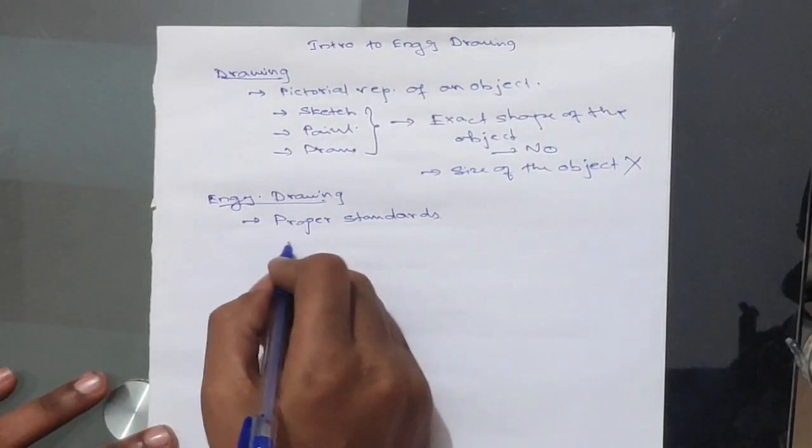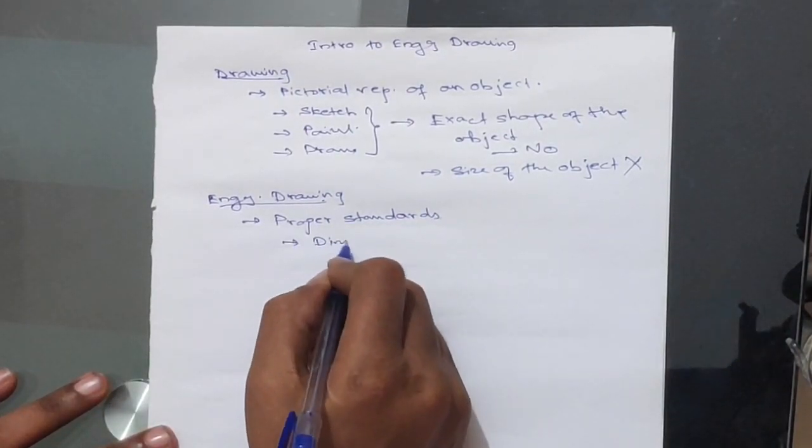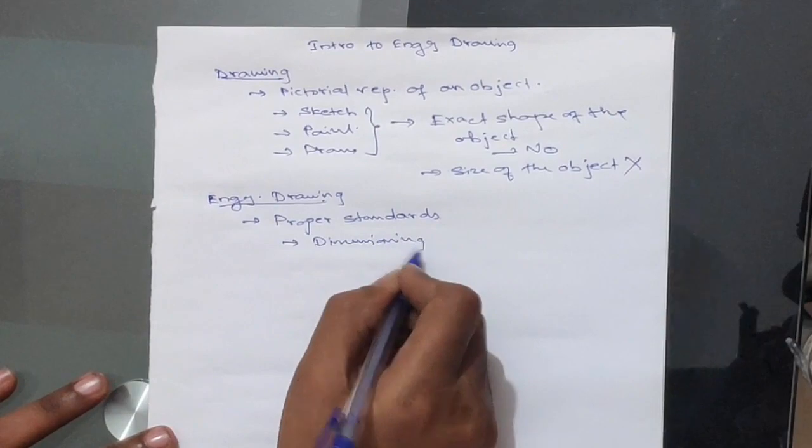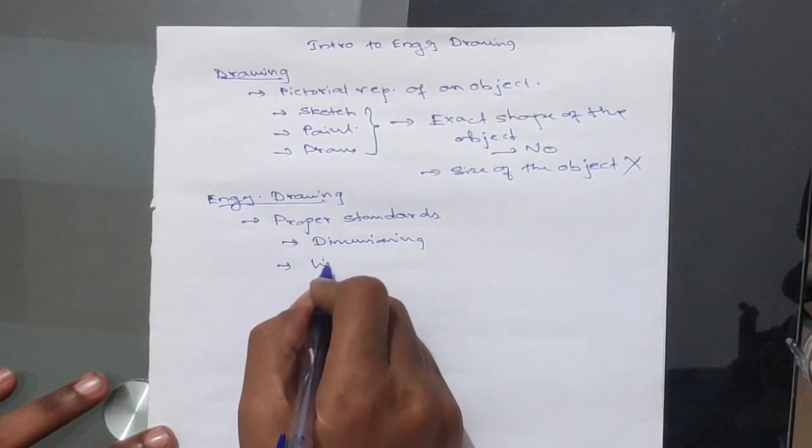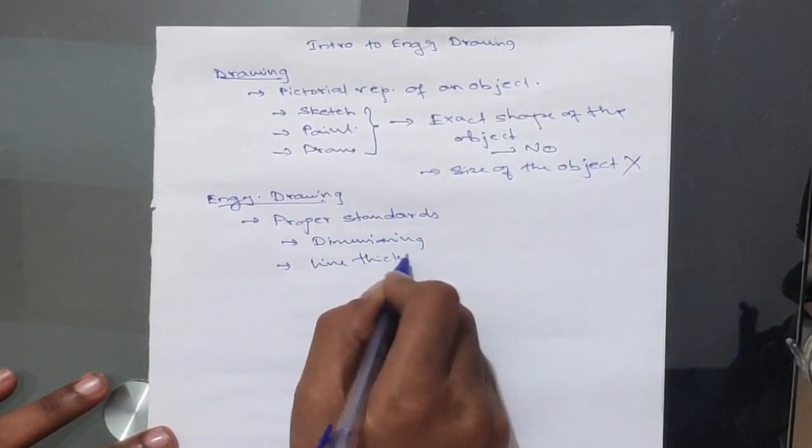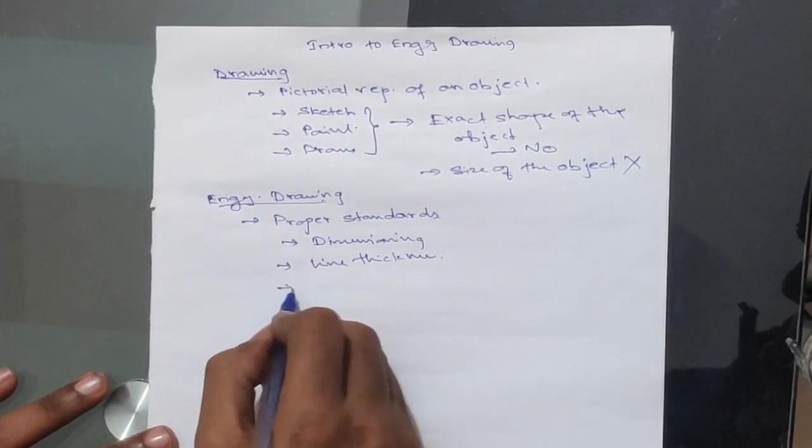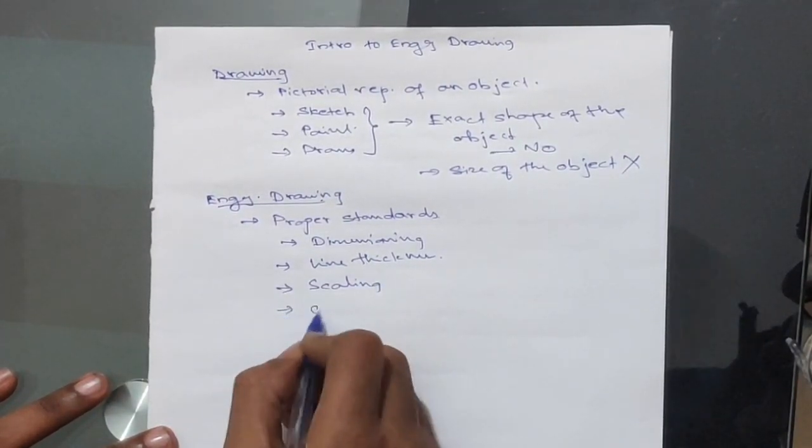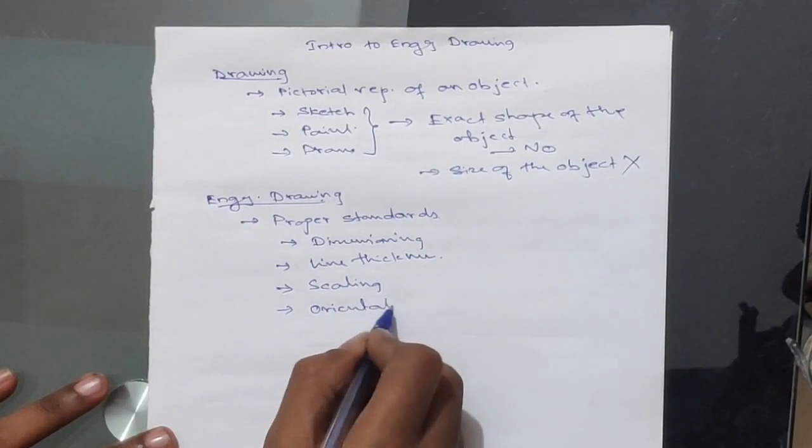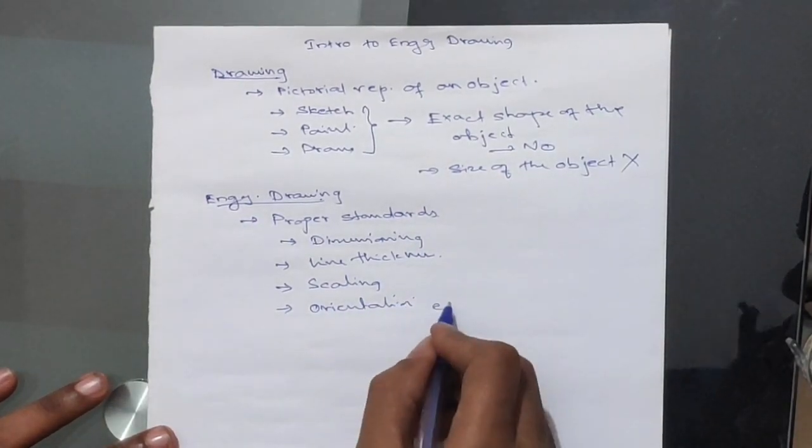Now, what are these standards? We will be using dimensioning, we will be making use of line thicknesses, we will be making use of scaling, there will be orientation, etc.